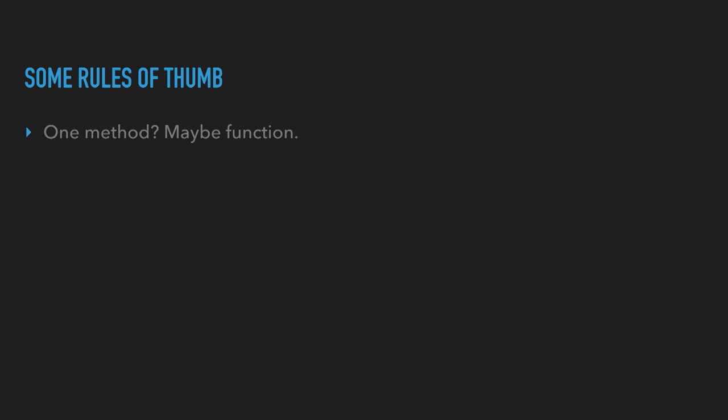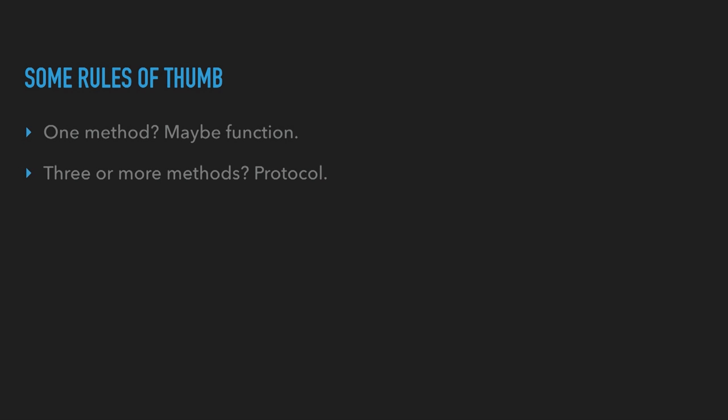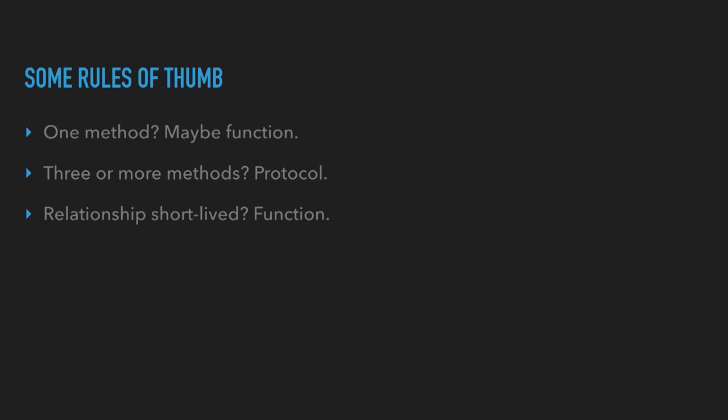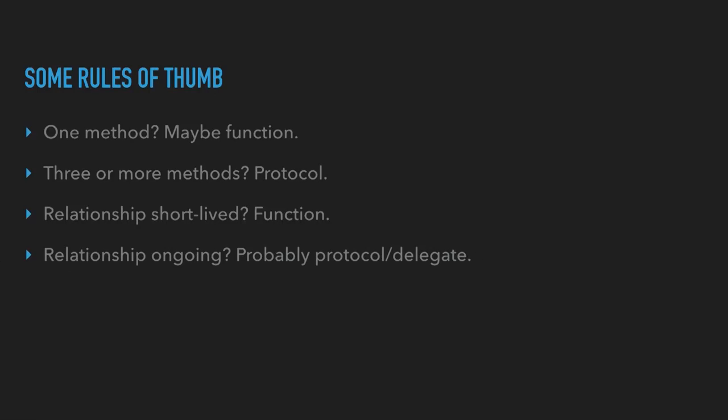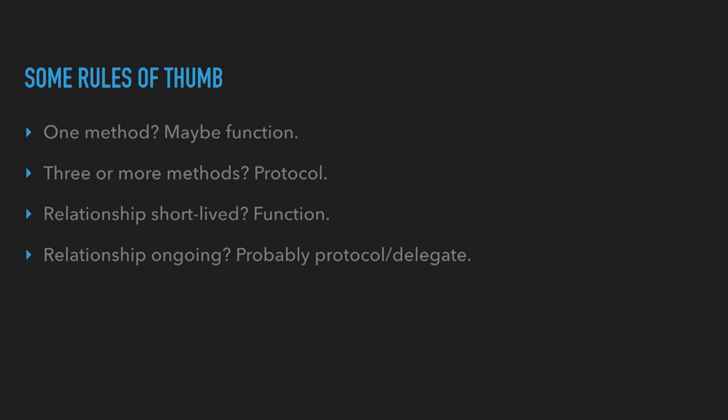Depends. There are some rules of thumb we've learned over the years as Cocoa programmers. One is that if the entire protocol has one method in it, you should think about whether it should just be a function and not worry about a protocol. Also, if it has three or more, then you probably don't want to pass those all as individual parameters — your APIs get really crazy, so wrap them up somehow. Is it a relationship that's short-lived? Is this just a callback — am I going to call this thing one time? Like a completion handler — often functions seem to work for that. Or is the relationship ongoing? These two objects are going to talk to each other constantly, like a data source. Well, data sources are protocols, delegates. So that tends to lean us toward protocols rather than using functions. These aren't hard and fast rules, but they give us an idea that there are certain heuristics to figure out what you should do.